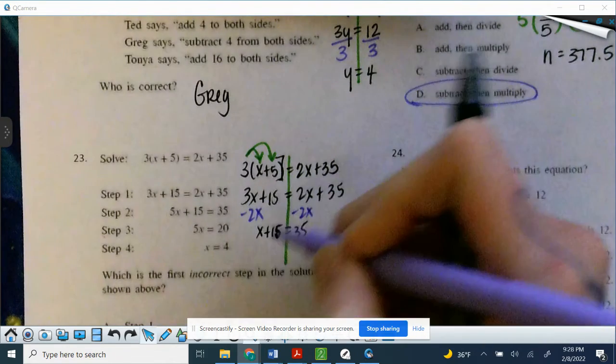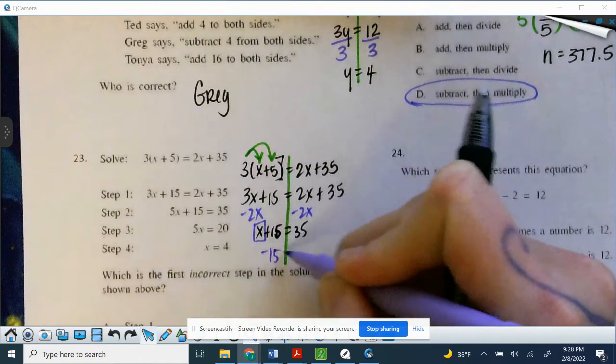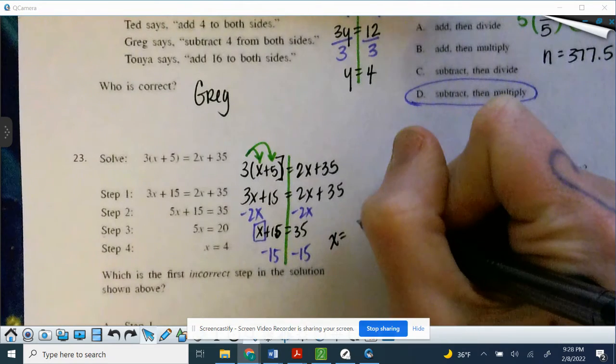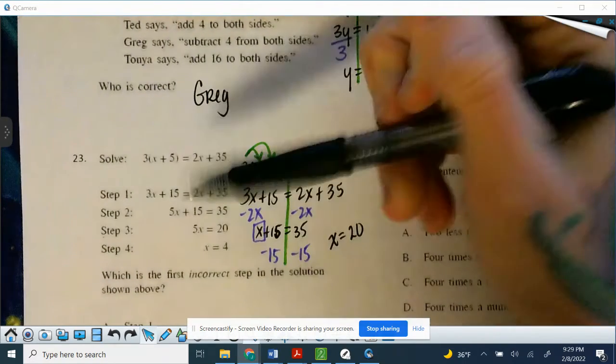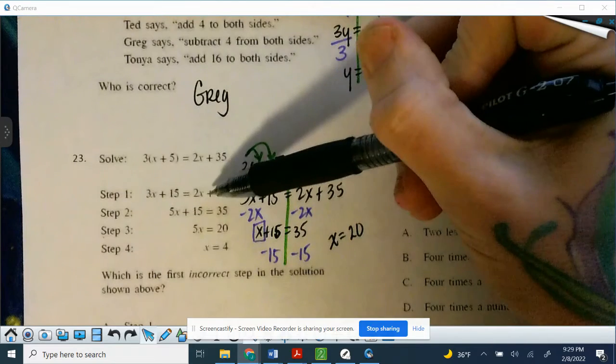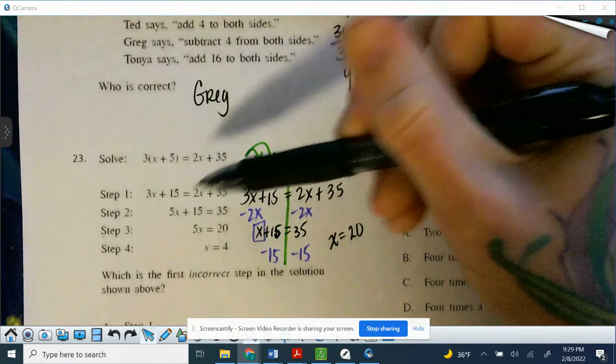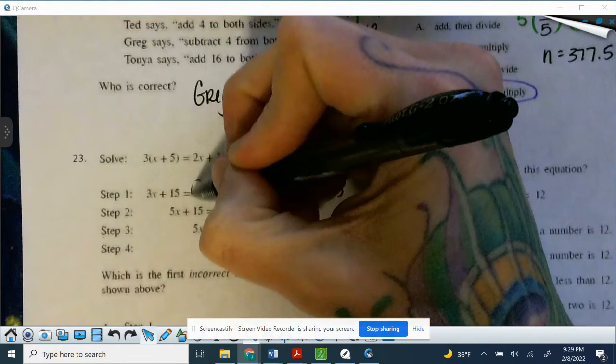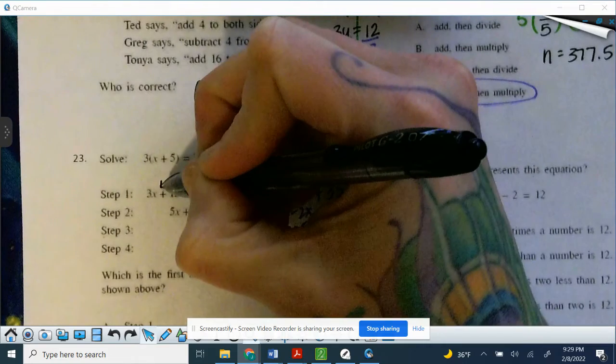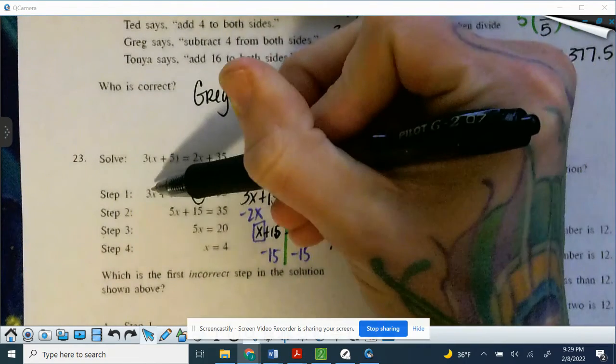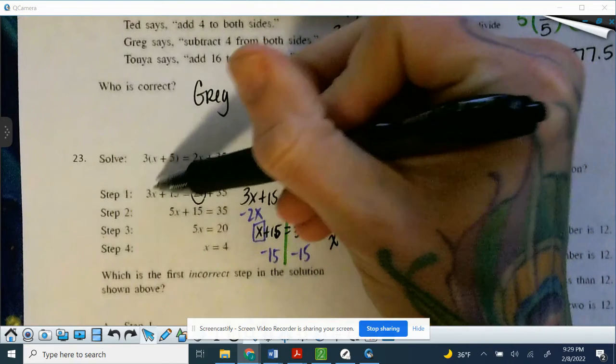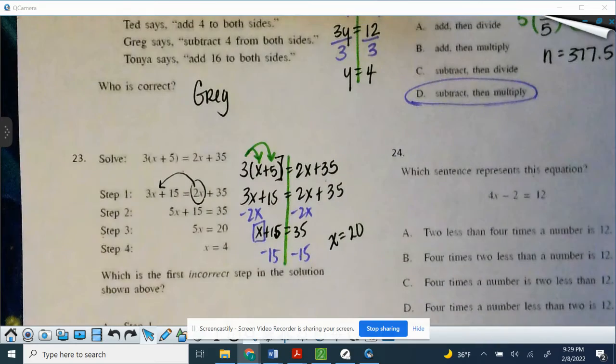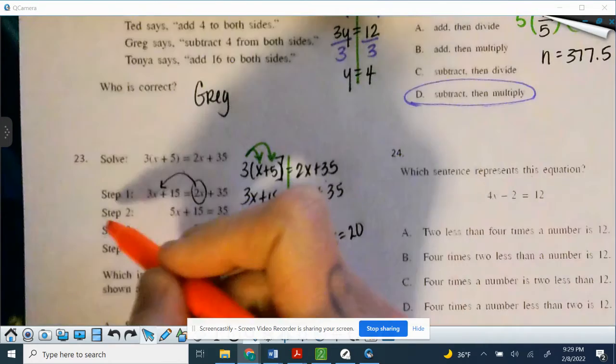I need x by itself, so I'm going to subtract 15 from both sides, and so x equals 20. Now, let's see what they did. So 3x plus 15 equals 2x plus 35, those steps matched. Then they have 5x, uh-oh, so they moved that 2x and added it, but because it crosses that equal mark, it can't be added. You have to do the inverse. So our biggest mistake happened in step 2.